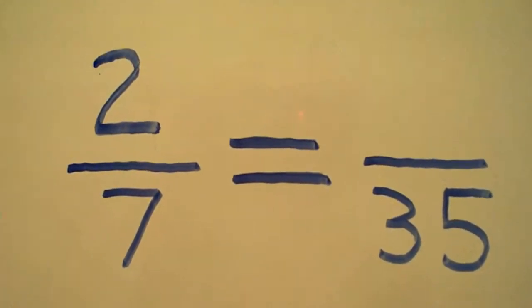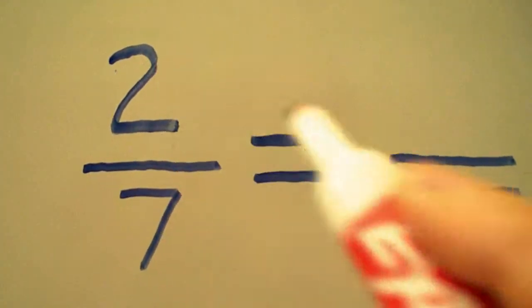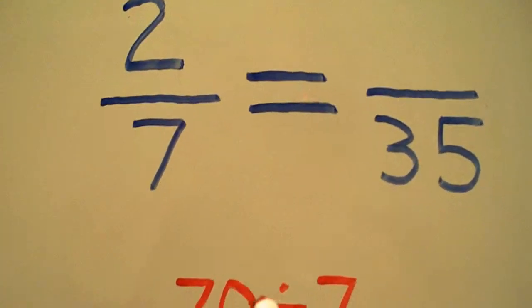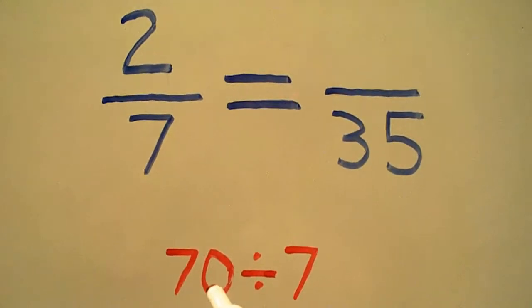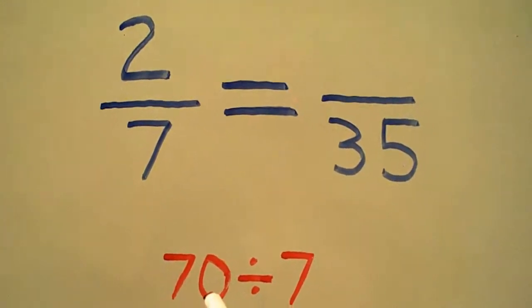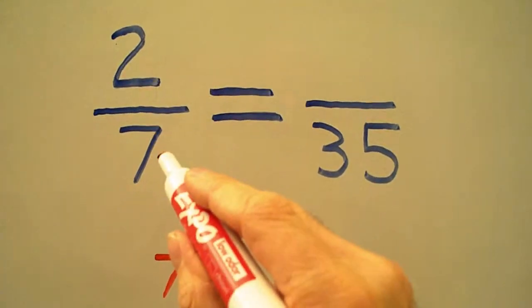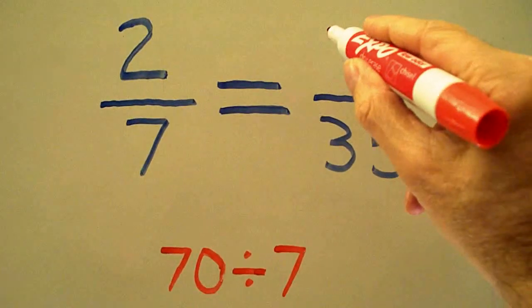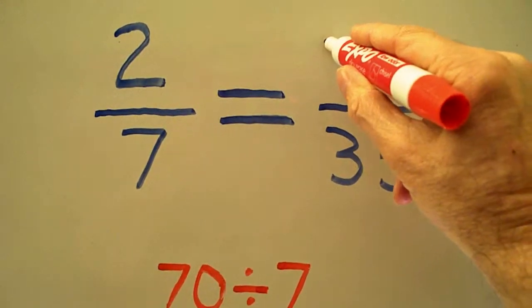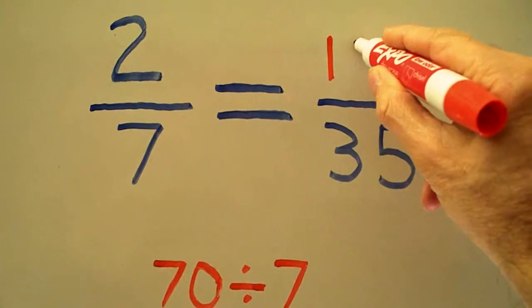So for example, we're going to go ahead and multiply 2 by 35 to get 70. All we do now is divide 70 by our 7, and that will give us the missing part of our fraction.